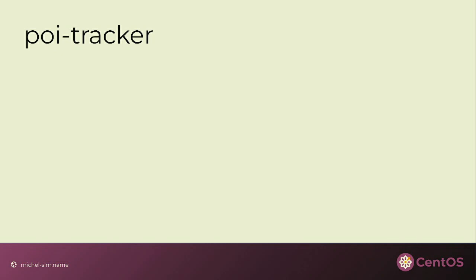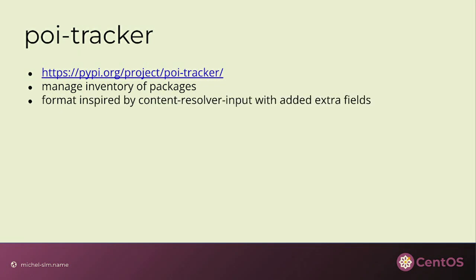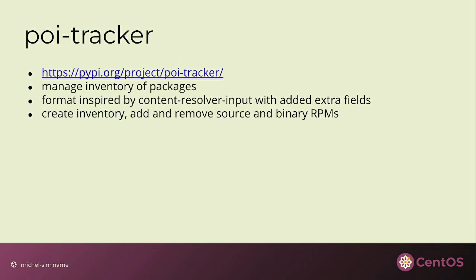So I came up with this tool called POI tracker — I just pushed it up to PyPI this morning. The idea is that you have an inventory of packages. Right now the format is heavily tied to content resolver input, but in the future this will be more general — you might want to track packages for other distributions or track upstream projects so you know if there's a new release. There is a CLI that you can use to do most operations automatically rather than by editing files. You can create an inventory, add a new package, or remove one. It stores data as JSON right now, but we can look at adding additional backends.